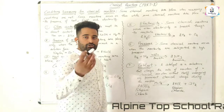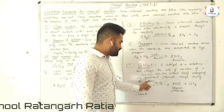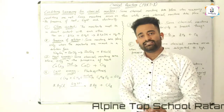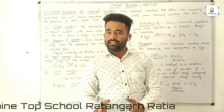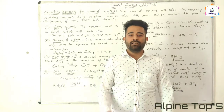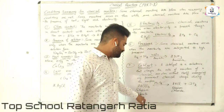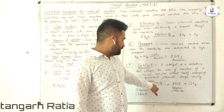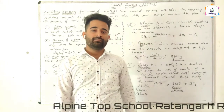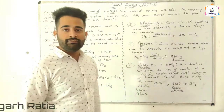The seventh condition is the catalyst. A catalyst is a substance that changes the rate of a chemical reaction without undergoing any permanent chemical change during the reaction. It can increase or decrease the speed of reaction without itself changing chemically. For example, when potassium chlorate is heated in the presence of manganese dioxide, potassium chloride and oxygen are formed. Manganese dioxide acts as the catalyst.